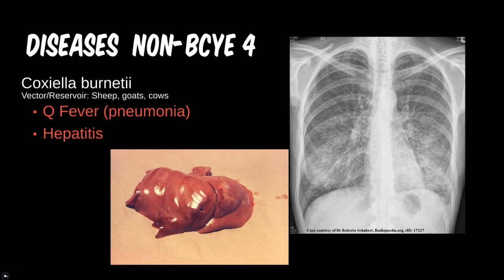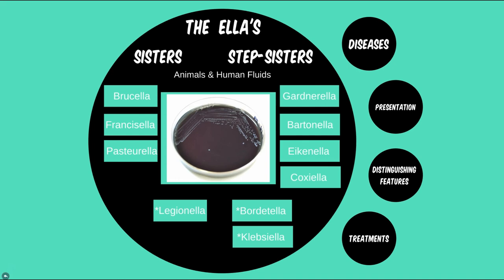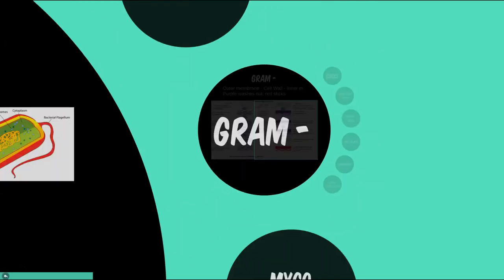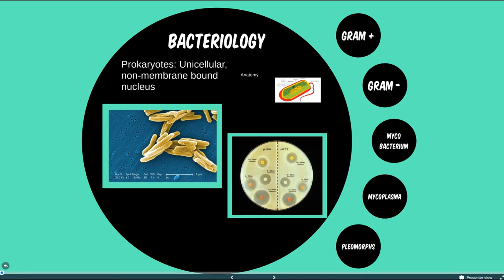This section was a hodgepodge of diseases and vectors, though they are most commonly associated with an animal reservoir. Remember that the stepsisters are negative on BCYE medium, while the others will grow. Any animal given in the question stem is likely to signify one of these infections. Next, we'll briefly review the common presentations.